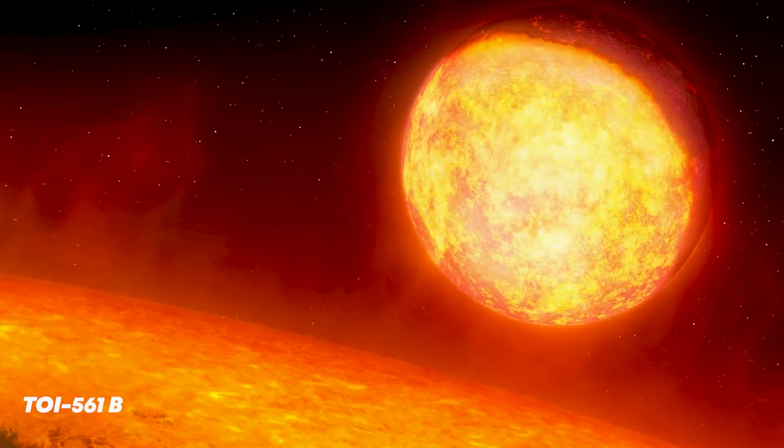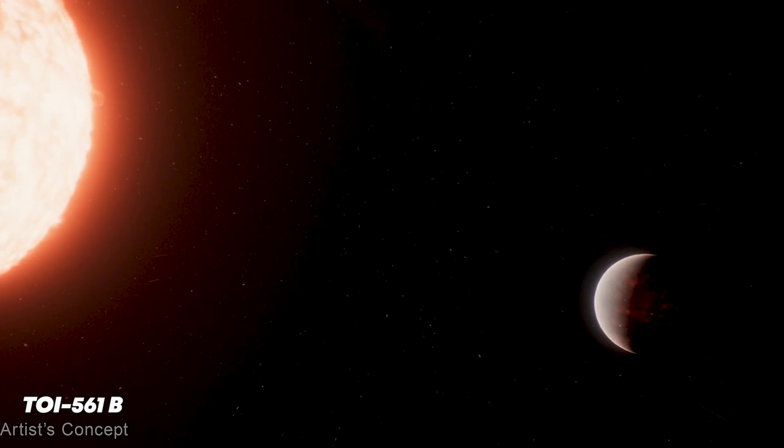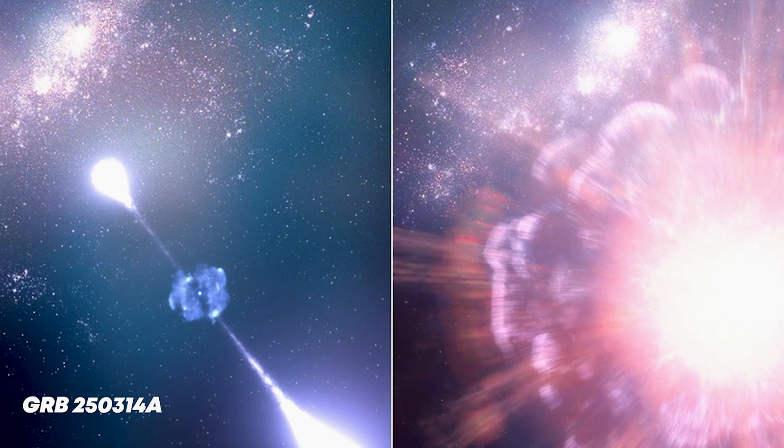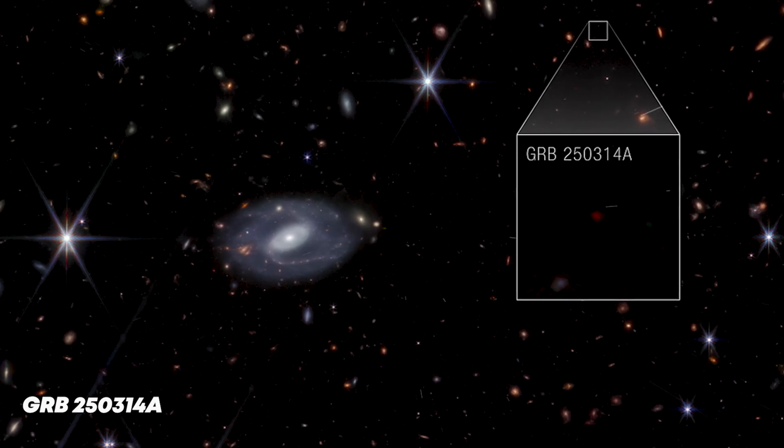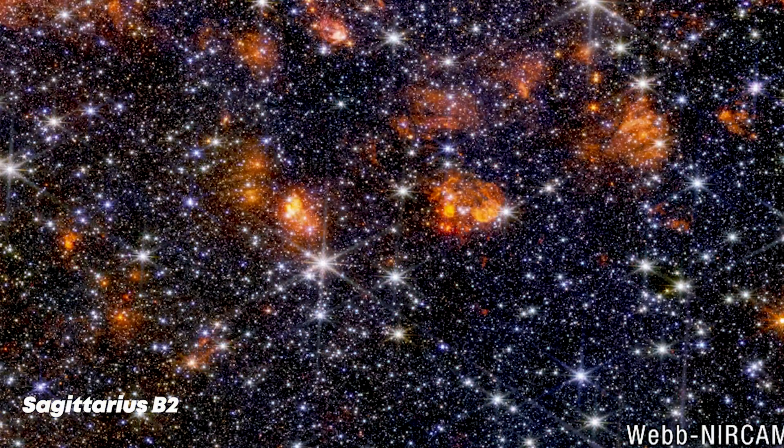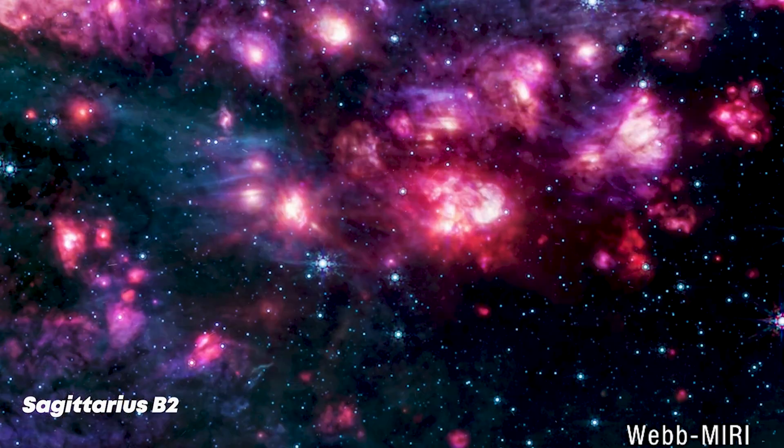A lava world orbiting so close to its star that its surface may be molten yet wrapped in a thick atmosphere. The earliest supernova ever confirmed, detonating when the universe was barely 5% of its current age. And a vast molecular cloud near the center of our galaxy quietly assembling stars from cold gas and dust.